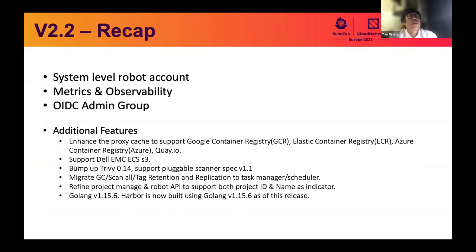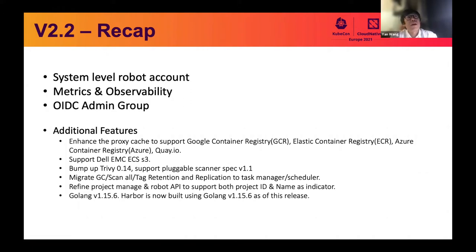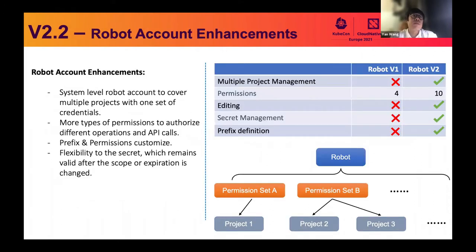Besides those two anchor features, Harbor 2.2 also introduced admin group support in OIDC. If a user is a member of an admin group, the user will have admin privileges in Harbor. Harbor 2.2 also extends the cross-registry replication list — adding GCR, ECR, and other registry support. For more details, refer to goharbor.io to get the latest documentation.